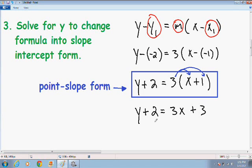And once again, I want to get y by itself for slope-intercept form. So to get y by itself, I want to subtract 2 from each side. So now the 2's cancel out and we get y by itself on the left-hand side is equal to 3x. And a positive 3 minus 2 gives us a positive 1.